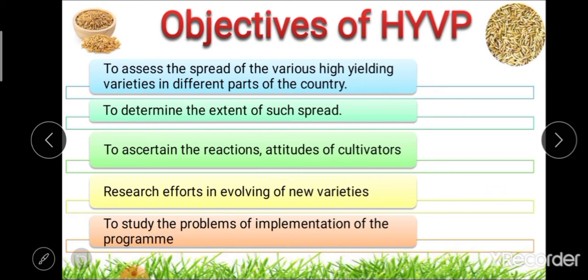The third objective involves research efforts in evolving new varieties. Besides the above objectives, the program also covered important aspects such as research efforts involving new hybrid or high-yielding varieties of crops. The fourth objective is to study the problems of implementation of the program.